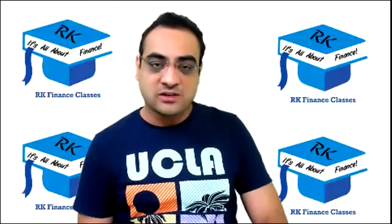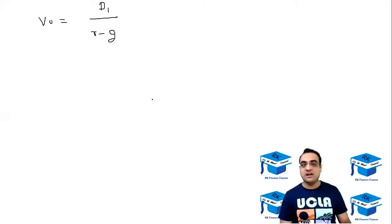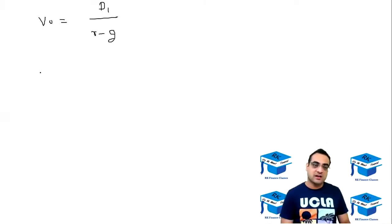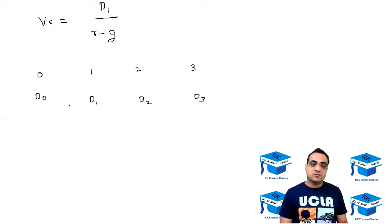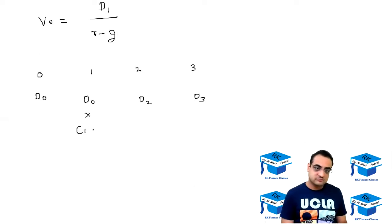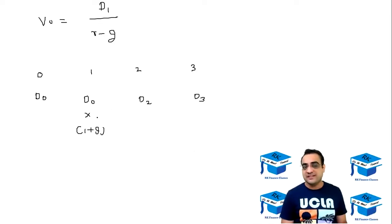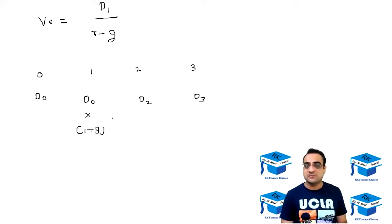We are going to have year zero where there will be D0, year one where there will be D1, year two D2, year three D3, and so on. So D1 would be D0 into one plus g. D2 would be D1 into one plus g, and D1 itself is D0 into one plus g, so D2 would be D0 into one plus g squared.